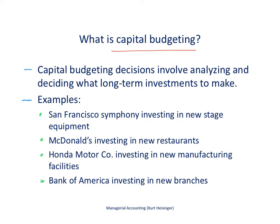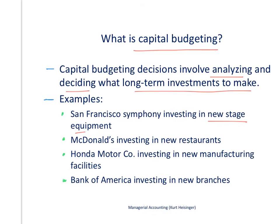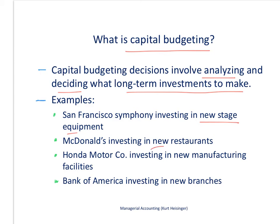Capital budgeting decisions involve analyzing and deciding what long-term investments to make. When we say long-term, we mean more than a year. These are investments in things like new stage equipment for the San Francisco Symphony, or McDonald's investing in new restaurants — certainly investments that will last for more than a year. Honda Motor Company investing in new manufacturing facilities, or perhaps Bank of America investing in new branches.